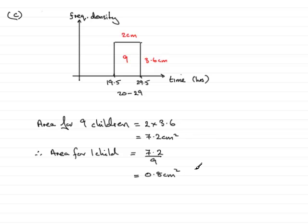And that's the end of part C. Now, in part D, we're asked to find the total number of children in the group, given that the total area under the histogram is 24 centimeters squared.